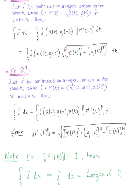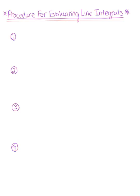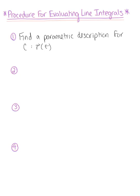Let's establish a procedure for evaluating scalar line integrals in R2 and R3 — this will also be helpful as we transition to vector line integrals. The procedure holds true in both R2 and R3. First things first: find a parametric description for C, that is, the vector-valued function R(t). Sometimes we're lucky enough to be given the parametric description, but if not, you need to find it. Once you have that parametric description, compute the magnitude of the tangent vector — find the length of the tangent vector with respect to the arbitrary parameter t.